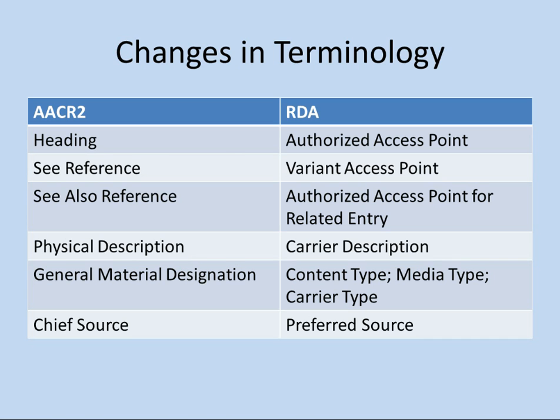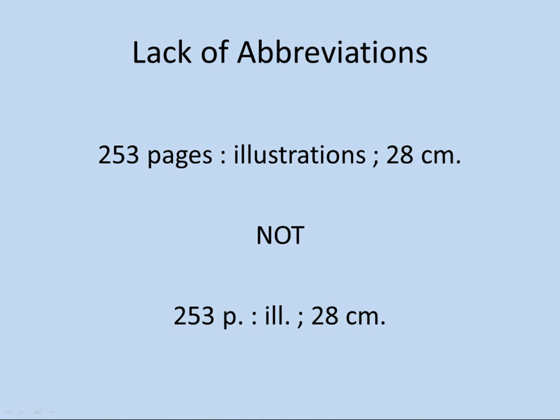Another terminology change: the chief source of information is now called the preferred source of information, with a bit more flexibility in terms of where you can get information from. Instead of specifying one chief source, there's usually more flexibility and more alternatives provided. One big change you'll also notice is far fewer abbreviations — words are going to be spelled out. This applies to things you record, not things that appear on the item. When describing the physical or carrier description, the word 'pages' is spelled out, the word 'illustrations' is spelled out. Centimeters still appears as CM — but CM is not actually an abbreviation, it is a symbol recognized by the international community.